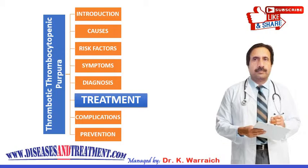Regardless of whether you have the inherited or acquired form, you will likely need treatment every day until your condition improves. If plasma treatment is not successful, your doctor may begin medications to stop your body from destroying the ADAMTS13 enzyme. Your spleen might also need to be surgically removed if other treatment options fail.